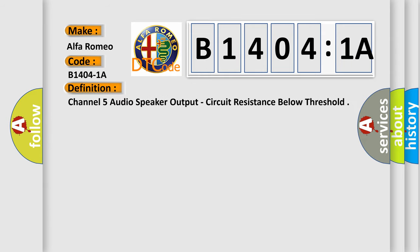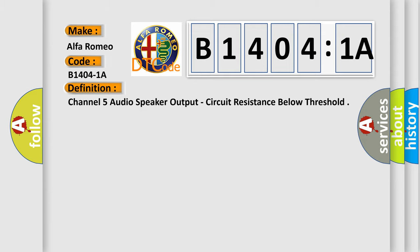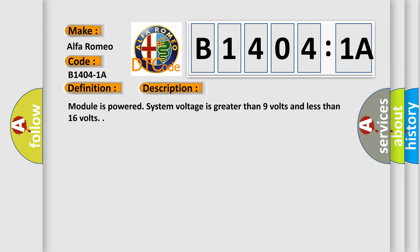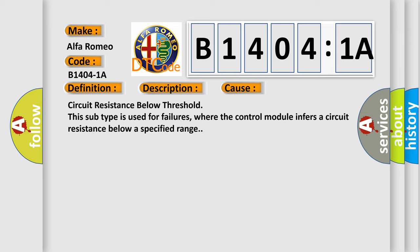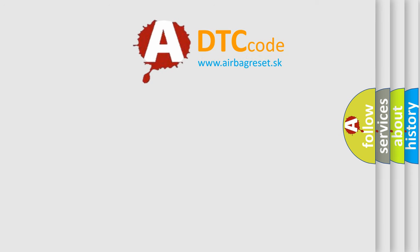The basic definition is: Channel 5 audio speaker output, circuit resistance below threshold. Here is a short description of this DTC code: the module is powered, system voltage is greater than 9 volts and less than 16 volts. This diagnostic error occurs most often in the case of circuit resistance below threshold. This subtype is used for failures where the control module infers a circuit resistance below a specified range.